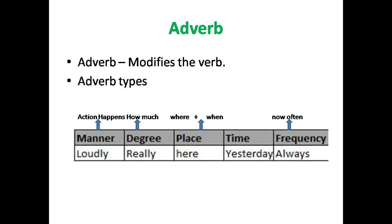Manner describes how an action happens. In degree: how much. Place: where. Time: when. Frequency: now, often.